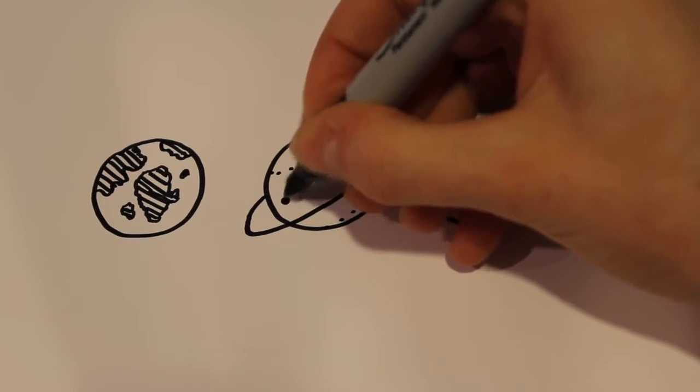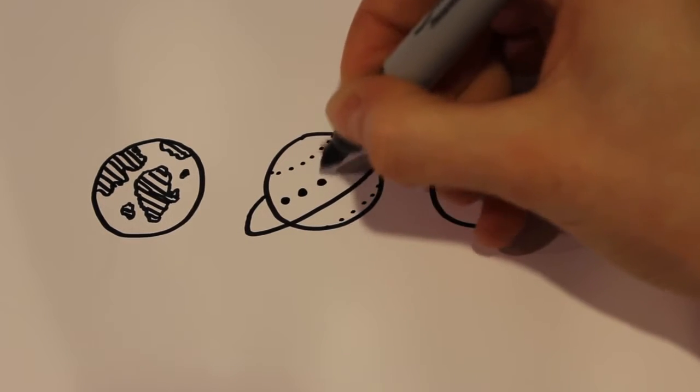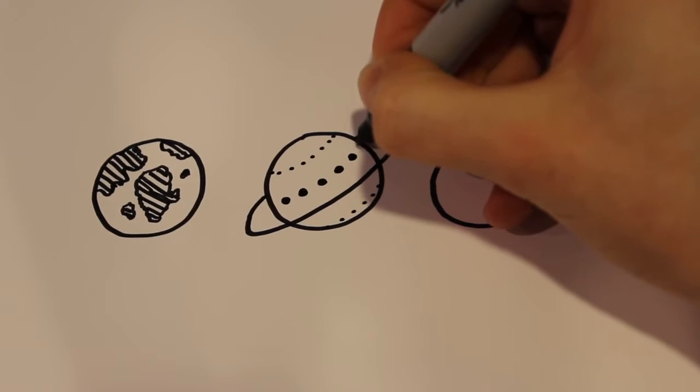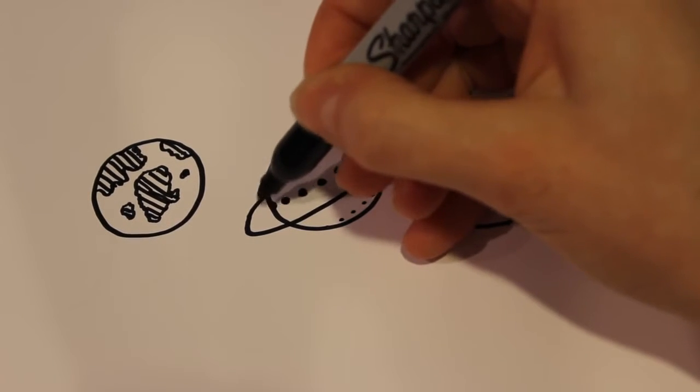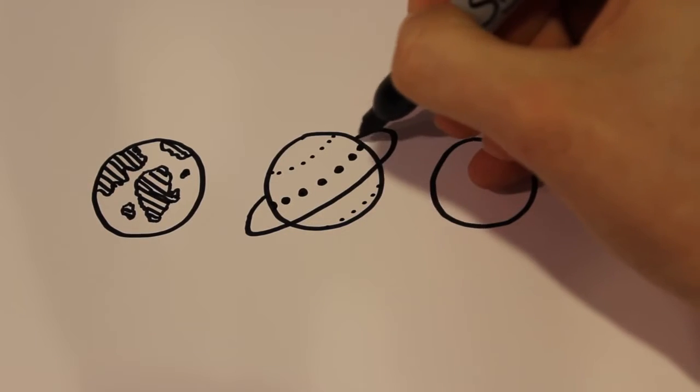And then I'm also going to draw bigger circles, doing the exact same thing. And you can go more in depth with this if you want to add maybe another ring around Saturn.